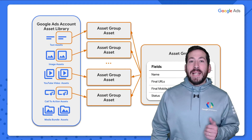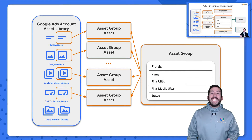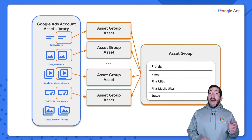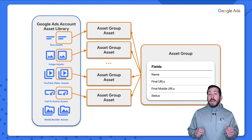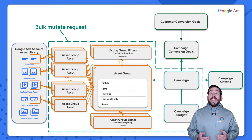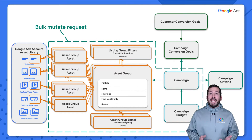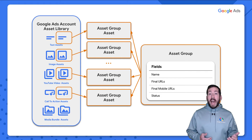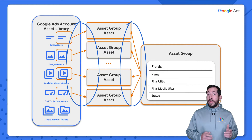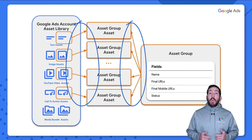You may recall this diagram from episode 5 when we discussed asset groups. Asset group assets are effectively the mechanism we use to attach assets to asset groups — they're a link between the two entities. Zooming out to get the whole PMax picture, you can see where asset group assets fit into the entirety of the process. They are part of that bulk mutate request that we issue in order to create a valid serving PMax campaign. Arrows point from both assets and asset groups to asset group assets.